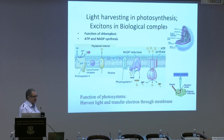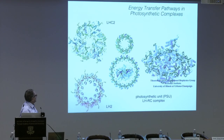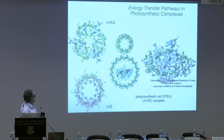Photosynthesis is based on complexes called antenna. There is a whole variety of these antenna. They sit in the membrane, and their task is to harvest sunlight and bring it to a reaction center where charge separation occurs. I will show calculations we did on the complex LHC2, which has 14 chlorophylls and is a trimer, and also results on FMO.